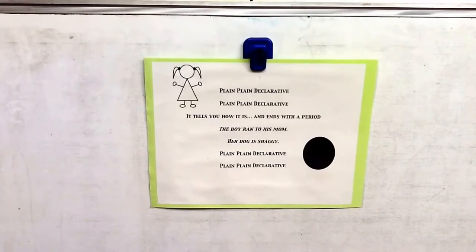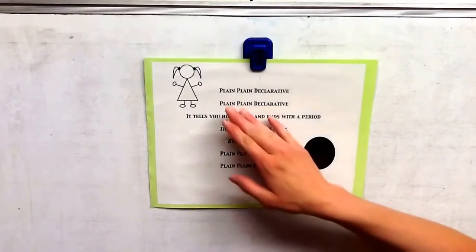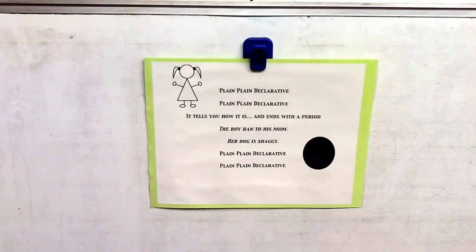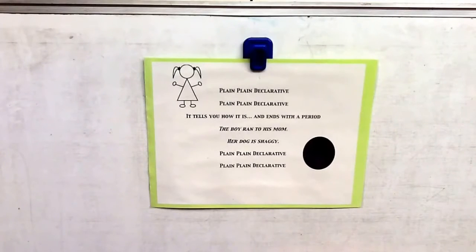There are four. The first sentence that we're going to learn about today is the declarative sentence. A sentence that's declarative is plain. It ends with a period. It's just telling us how it is. I have a song that we're going to sing to help us remember what a declarative sentence is.